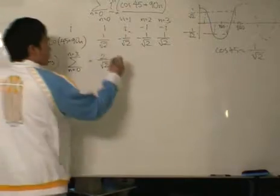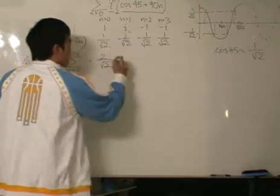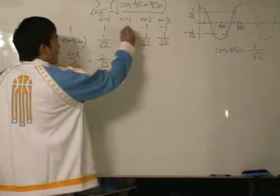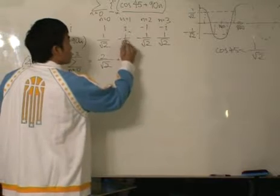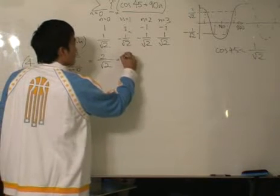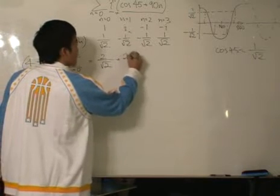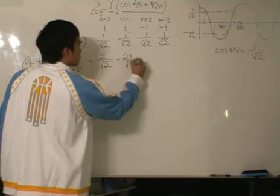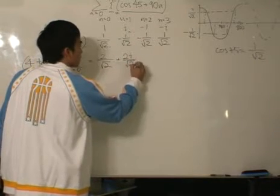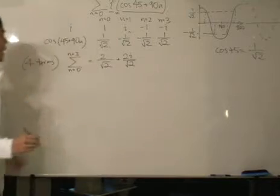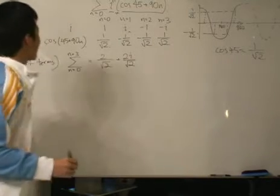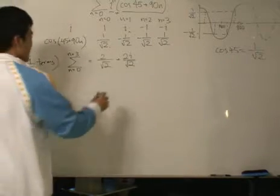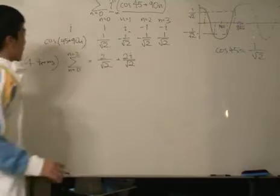And then after that, doing it for the imaginary side, we add again and we get 2i over root 2. At this point we can rationalize the denominator, but we shall not do that at the moment. So this is what we get.